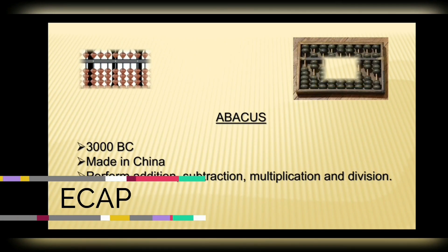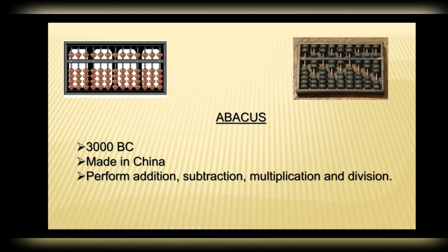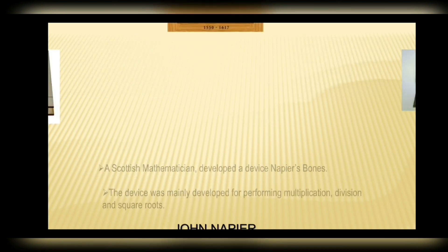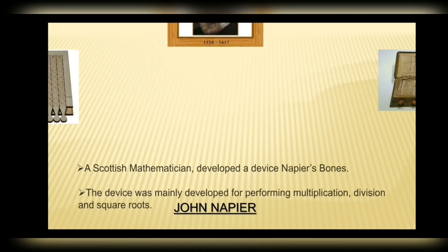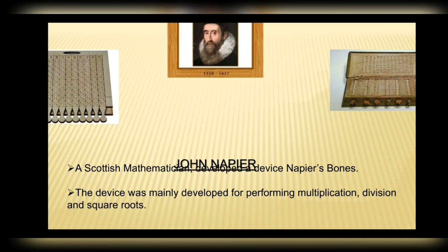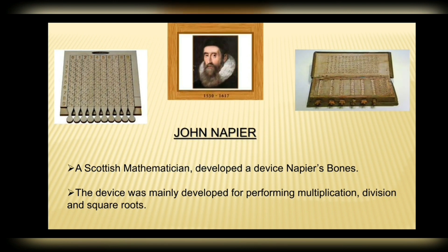Number one: Abacus — 3000 BC, made in China, used to perform addition, subtraction, multiplication, and division. Number two: Napier's Bones — John Napier, a Scottish mathematician, developed a device called Napier's Bones, mainly developed for performing multiplication.